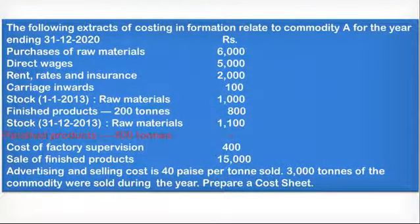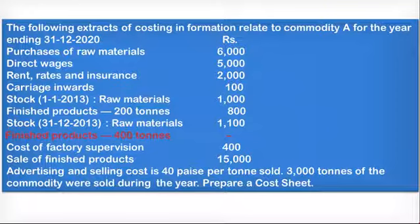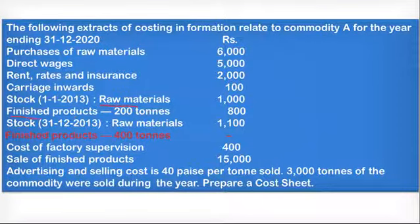Looking at the question, the information is regarding commodity A for the year ending 31st December 2020. The given data includes: purchase of material Rs. 6,000, direct wages Rs. 5,000, rent rates and insurance Rs. 2,000, carriage inward Rs. 100, opening stock of raw material Rs. 1,000. The finished product opening stock is 200 tons valued at Rs. 800. The closing stock date is 31st December 2020.